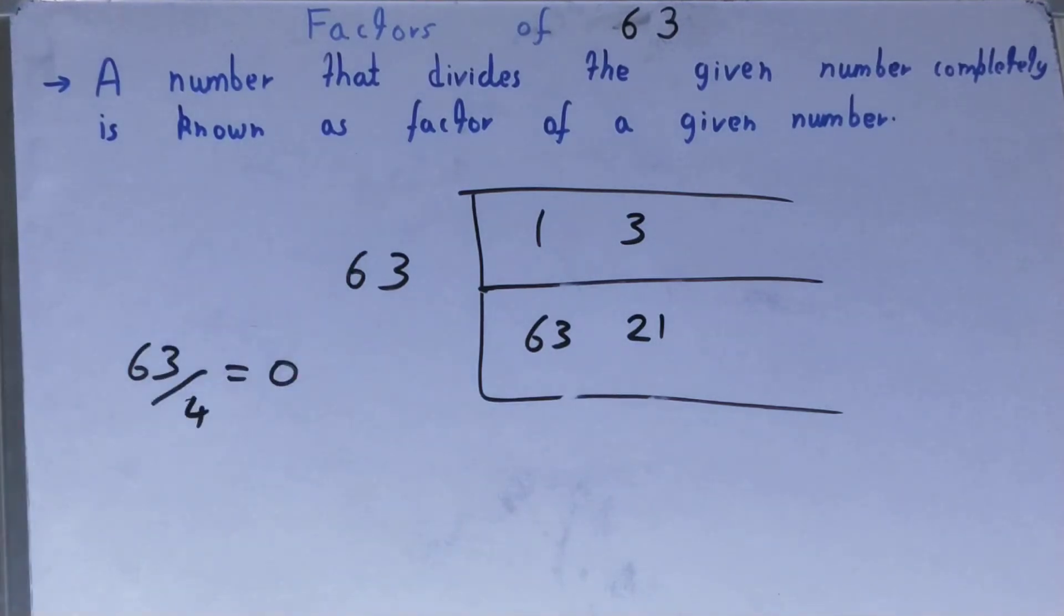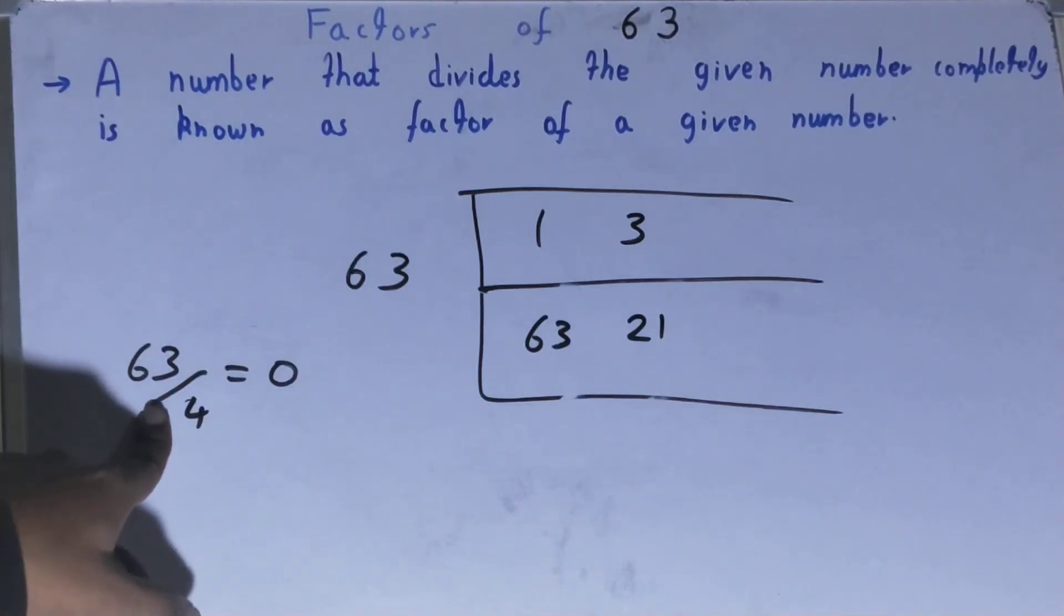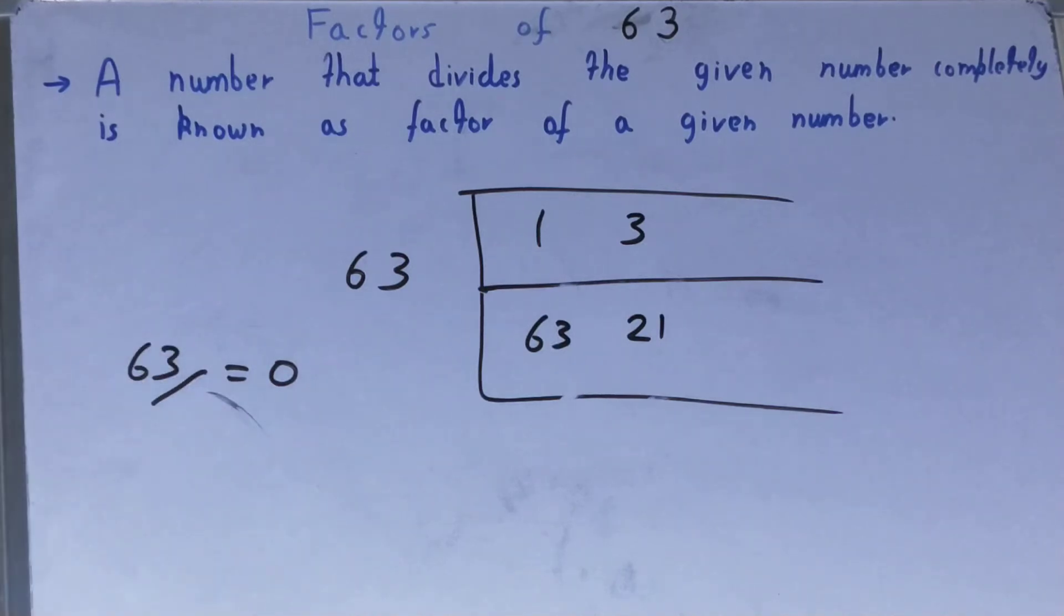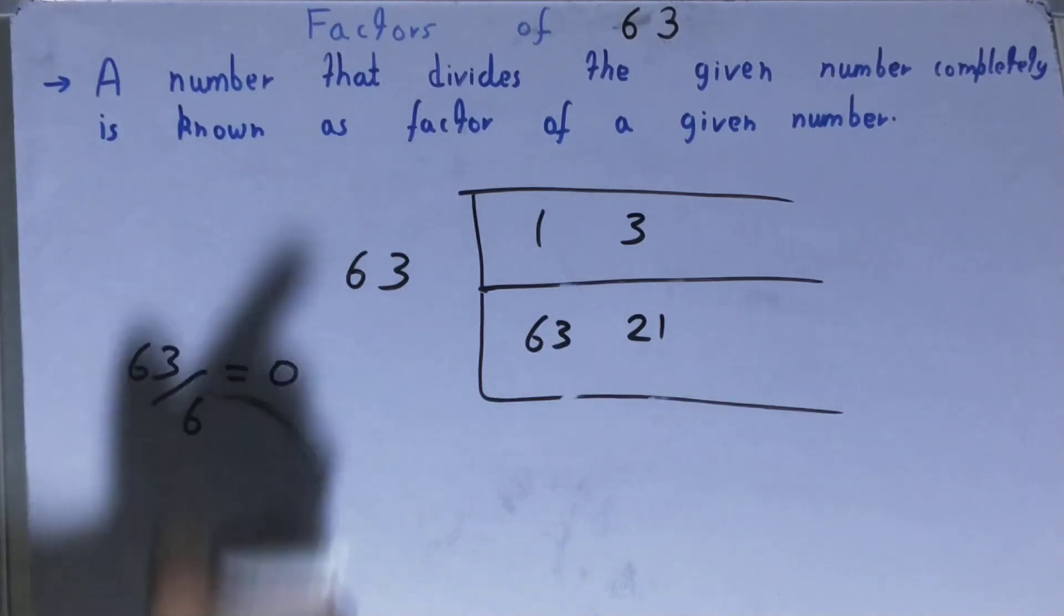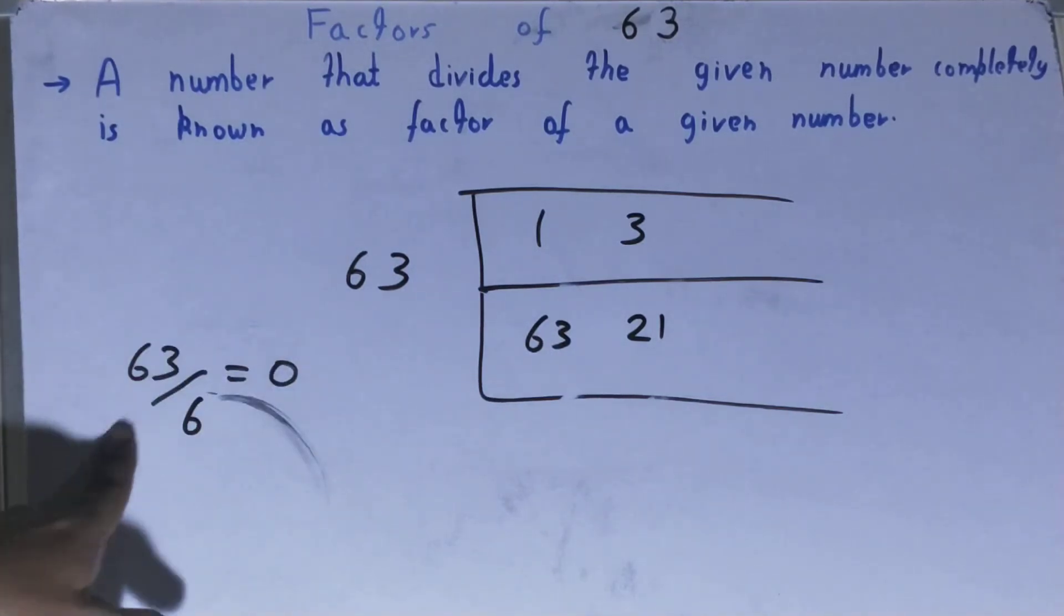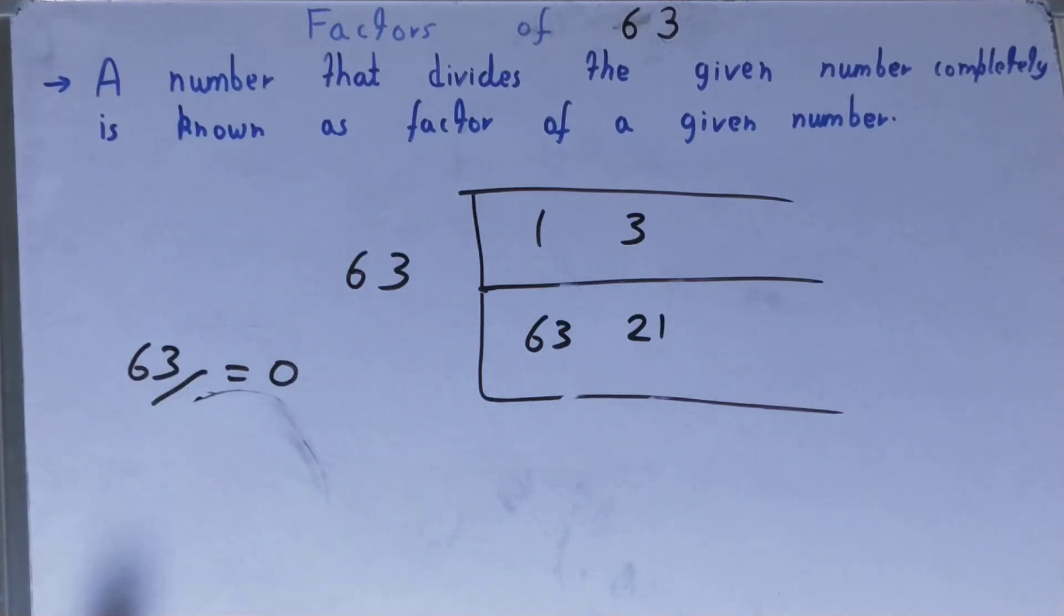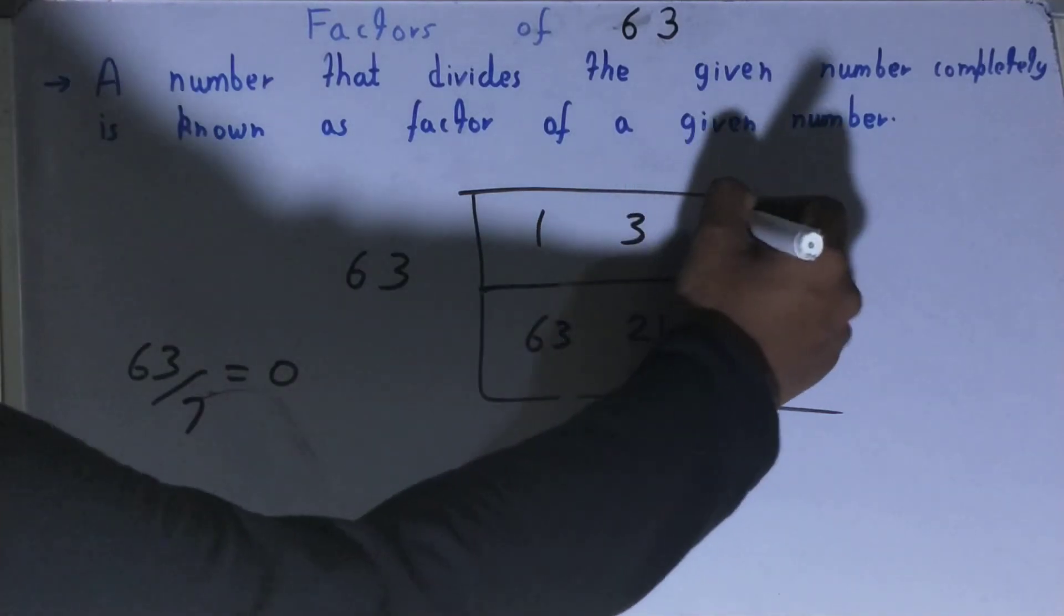After 3 comes 4. If you try with 4, will you get the remainder zero? No, you'll get the remainder as 3. If you try it with 5, will you get the remainder zero? No, you'll get the remainder 3. If you try it with 6, will you get the remainder zero? No, you'll get the remainder 3 again.